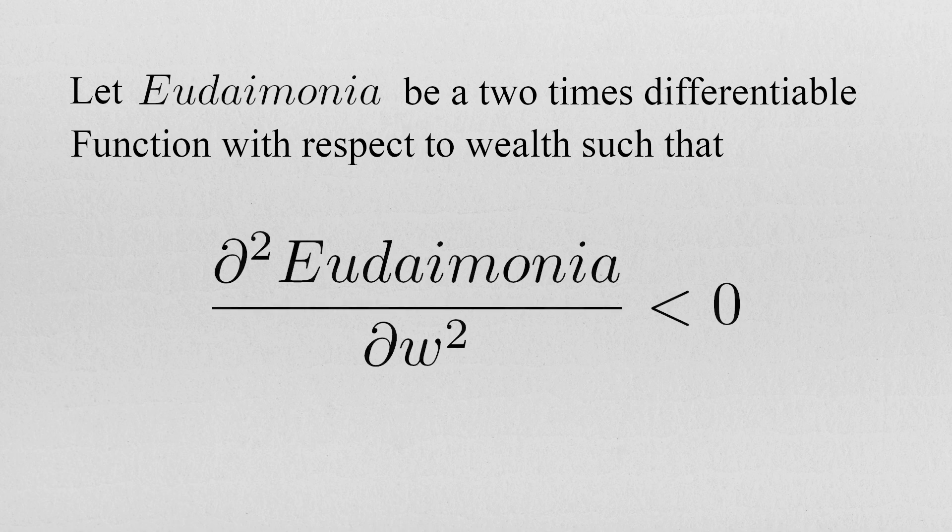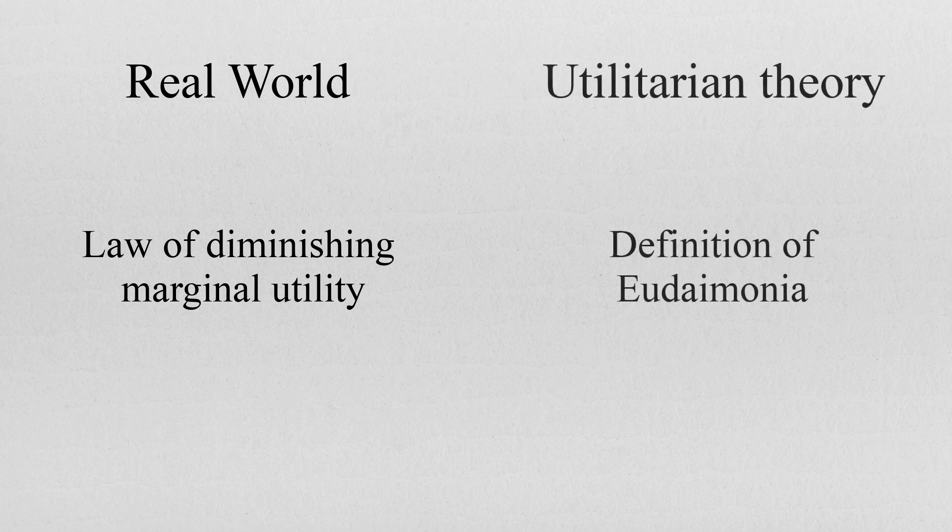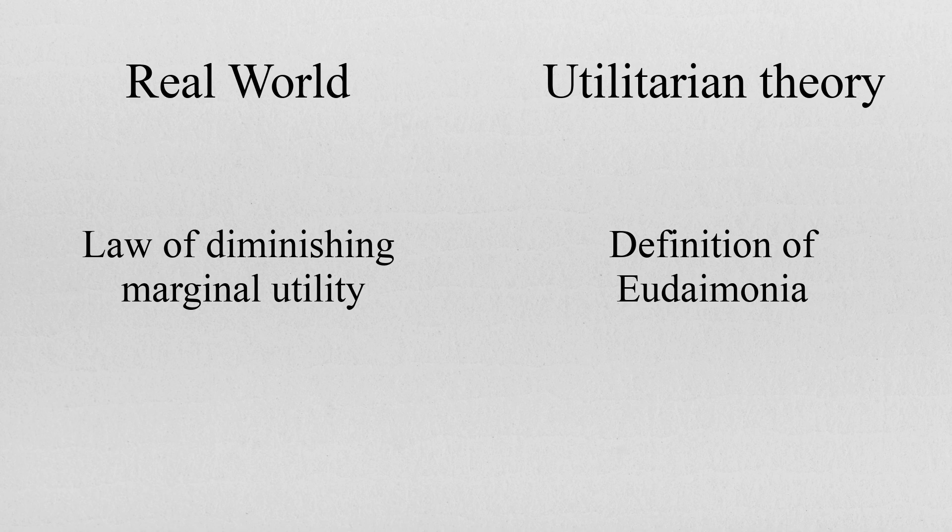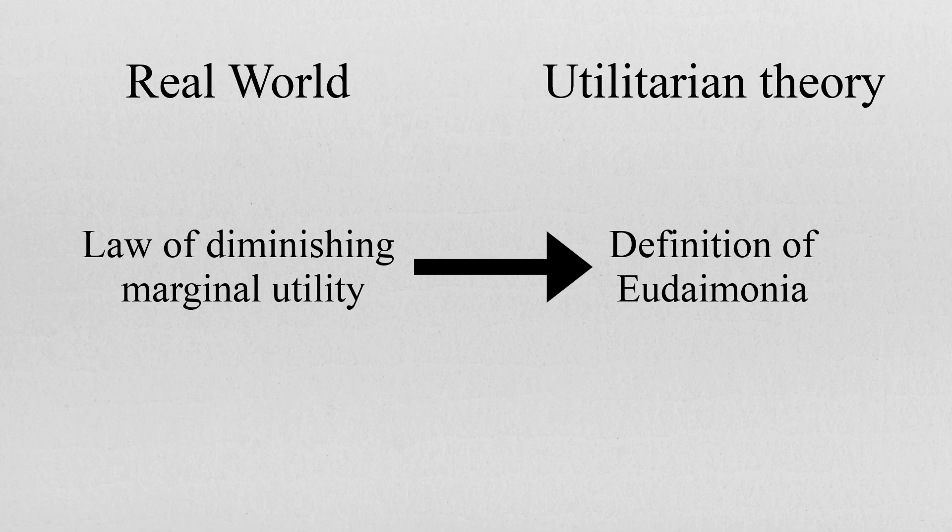That is by imposing in the definition of utility the law of diminishing marginal utility. This operation consists of taking a law that describes an empirical phenomenon, the law of diminishing marginal utility, and assuming it as a part of the utilitarian model, incorporating what is an observed occurrence directly in the theoretical apparatus of utilitarianism.